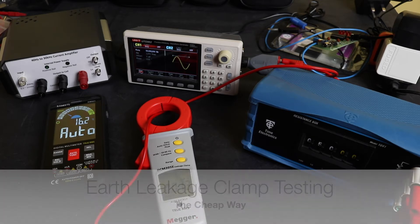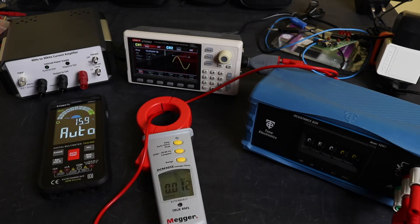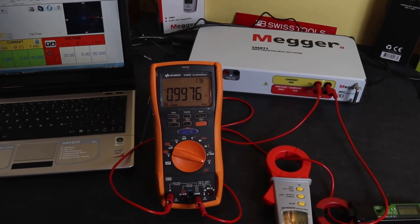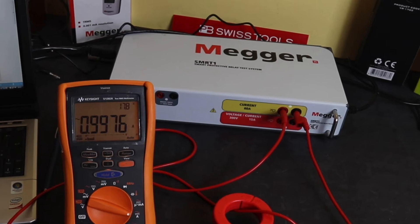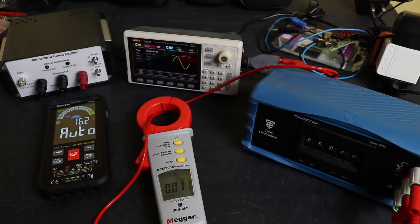Welcome back to the channel. Hope everyone's doing well. In this video I'm just going to go back to the testing of the earth leakage clamps that I covered in a previous video. Now in that video I used a secondary current injection test set or SCITS as we call them. I appreciate that not everybody would have such an advanced piece of test kit, so in this video I'm going to look at a couple of methods that are much cheaper and much easier for people to obtain and use to carry out some basic tests on this kind of instrument.